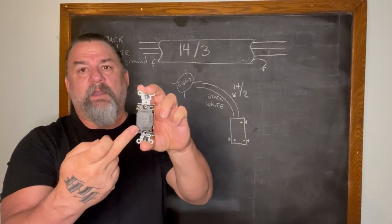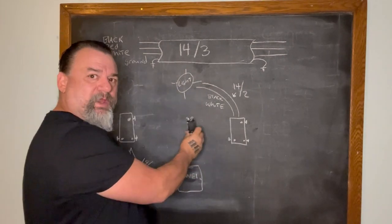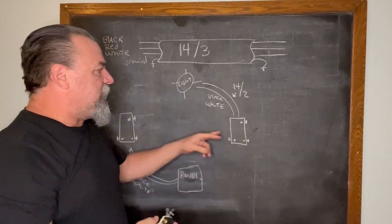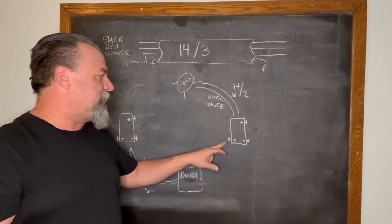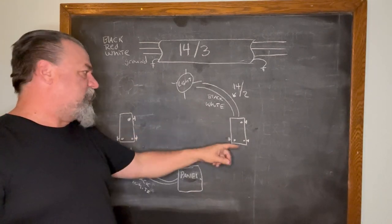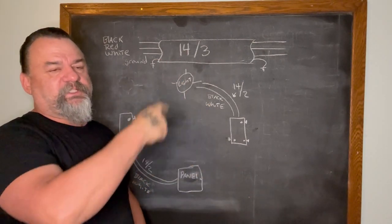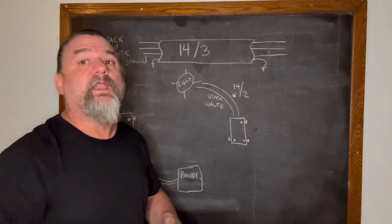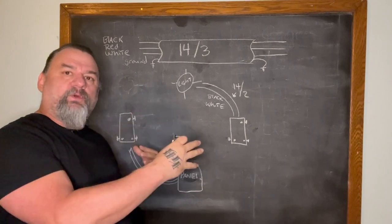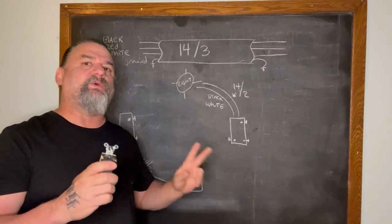So you go black and red, black and red, and then ground it. And that's in between your two three-ways. You can have 20 of these because it just depends on the position of the switch. If it's up, then the current may travel from this terminal to this one, or if it's down from this one to this one, to the other one. It's vice versa to it. But you just need to know that that's how you wire them. That's how you put a four-way switch in between a three-way switch.